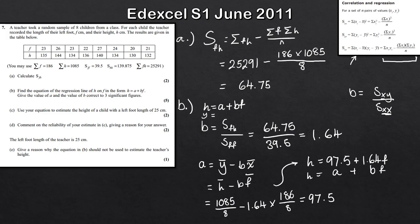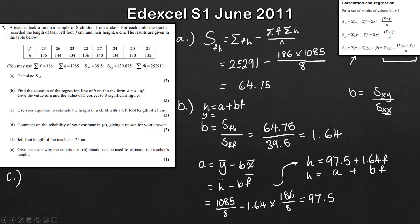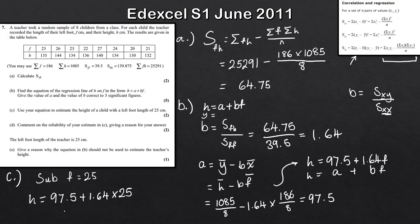That's part b done, giving five marks. For part c, we're asked to use the equation to estimate the height of a child with a left foot length of 25 centimetres. We substitute f equals 25 into our regression line: h equals 97.5 plus 1.64 times 25. That gives us 138 centimetres. That's two marks for part c.